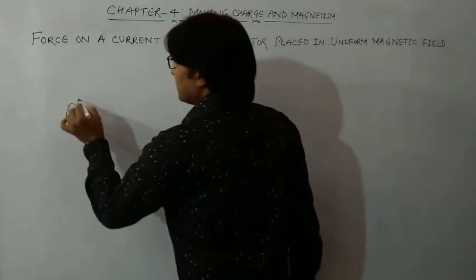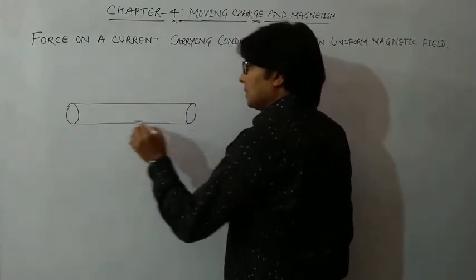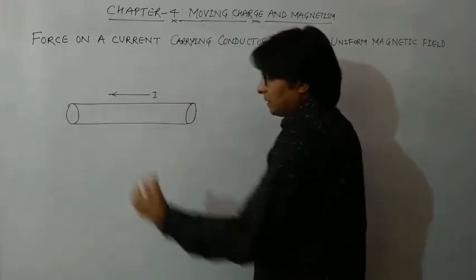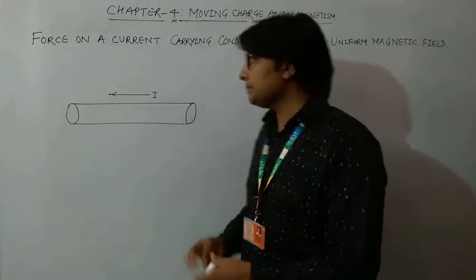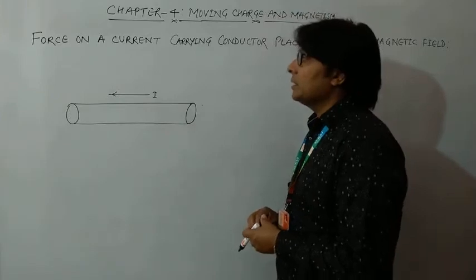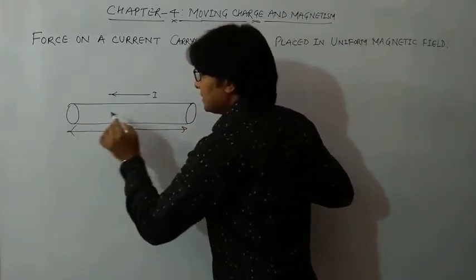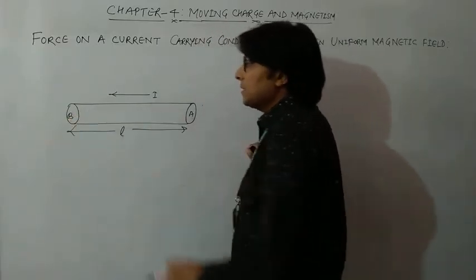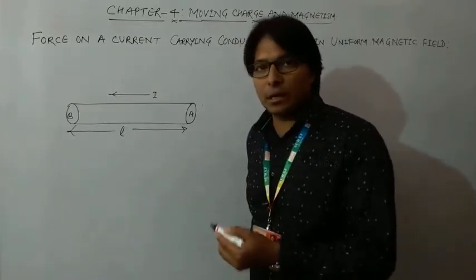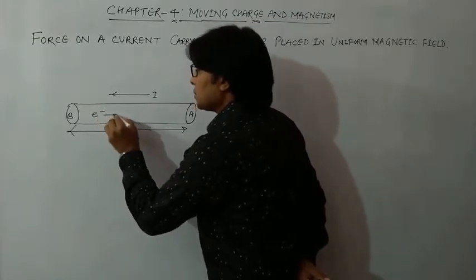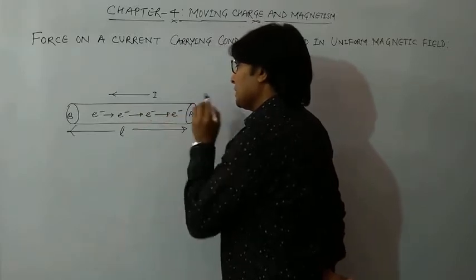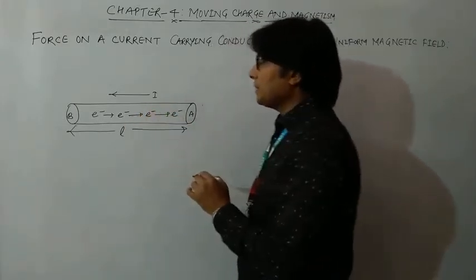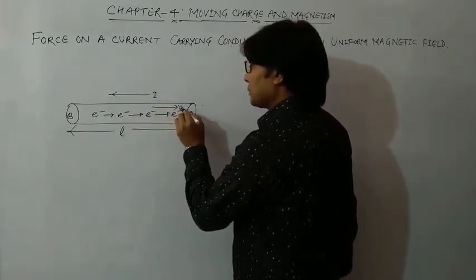I am assuming here that I have this conductor of length L in which current I is flowing in this direction due to the application of a battery. The direction of current is assumed from point A to point B. This current flows due to the flow of electrons, so the electrons will be flowing in the opposite direction — from point B to point A — with drift velocity Vd vector.